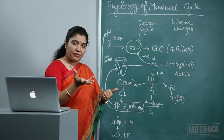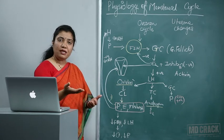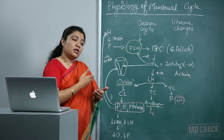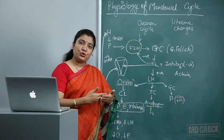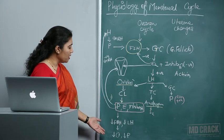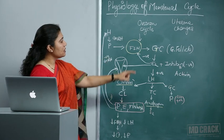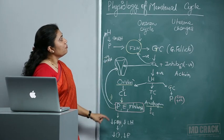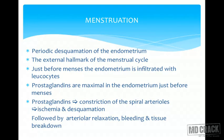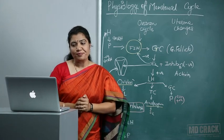Vessels relax after vasoconstriction, leading to bleeding. Blood and tissue come out as menstrual blood — visible menses. This is the whole cycle, which is very important to understand in order to understand any defect in it. This chart will help you to understand everything very clearly.